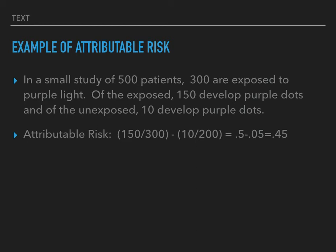So attributable risk: 150 over 300 — that's 150 exposed diseased people divided by 300 total exposed people — minus 10 non-exposed but diseased people over 200 total unexposed, because 500 minus 300 is 200. You get 0.5 minus 0.05, or 0.45 as the attributable risk. So 45% is attributable to exposure to purple light.